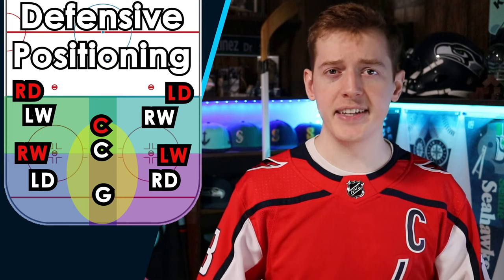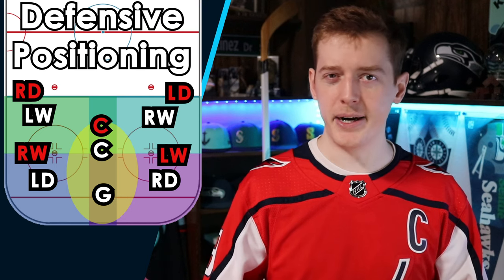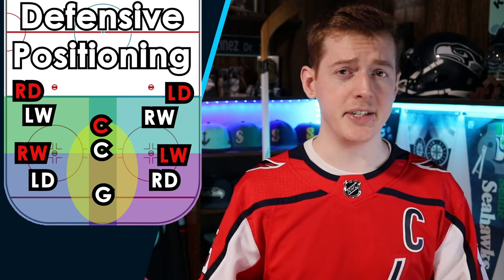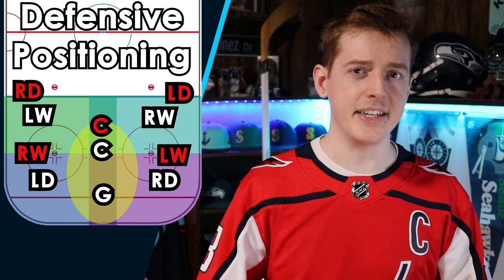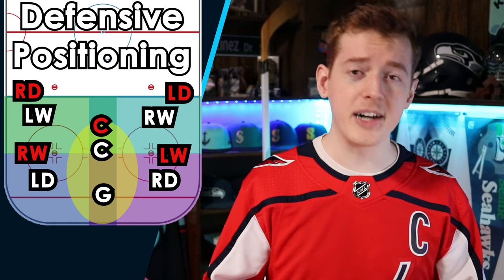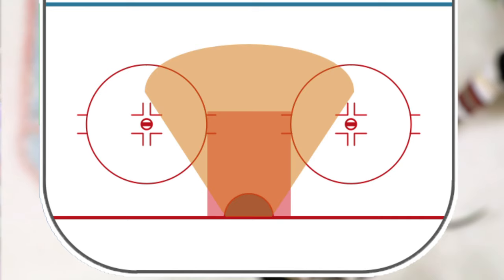Whether it's zone or man defense, our main goal on defense is to make sure that the puck doesn't go into the net. The best way to do that is to prevent the opposing team from getting chances in the slot or any high danger areas. The slot is the area right in front of the net down the middle — the highest danger scoring area. The rest of the high danger area is usually seen as a cone going out from the net, or if it's Ovechkin, over in his area on the left side.